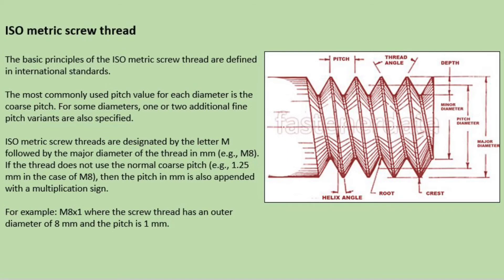Isometric screw thread. The basic principles for the isometric screw thread are defined in international standards. The most commonly used pitch value for each diameter is the coarse pitch. For some diameters one or two additional fine pitch variants are also specified. Isometric screw threads are designated by the letter M followed by the major diameter of the thread in millimetres — for example, M8. If the thread does not use the normal coarse pitch, for example 1.25 millimetres in the case of an M8 bolt, then the pitch in millimetres is also appended with a multiplication sign — for example, M8×1, where the screw thread has a diameter of 8 millimetres and the pitch is 1 millimetre. Please study the image on the right hand side of this screen.